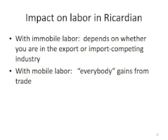We can now summarize the effects on labor in the Ricardian model when you open up to trade. With immobile labor between sectors, workers in the import-competing sector definitely get hurt, while workers in the exporting sector definitely benefit. To the extent that you're stuck in a sector, your interests are tied to the price of the good you produce. If labor can move between sectors, all workers benefit from opening up to trade — but this is only the case in the Ricardian model, as we'll see later.